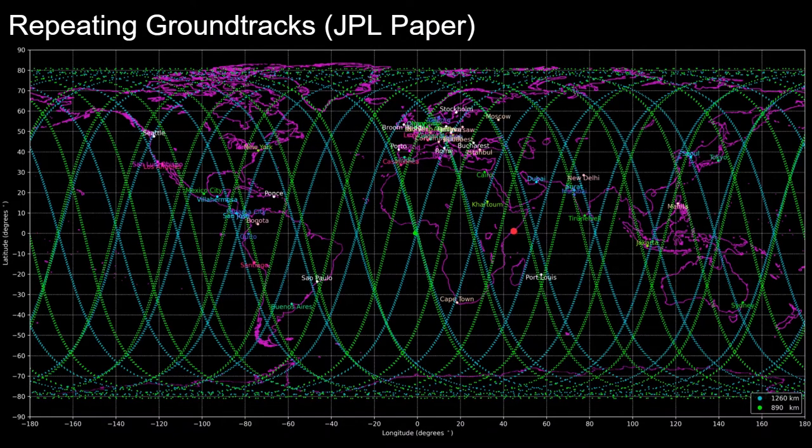So here are the ground tracks for those 890 and 1260 kilometer altitude sun synchronous orbits plotted for 48 hours. And notice that these ground tracks do in fact repeat but not exactly over each other. The repeating ground tracks have some space in between them which the paper covers in much more detail if you're interested.